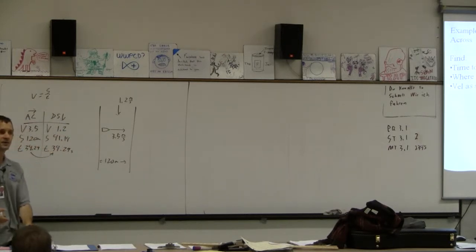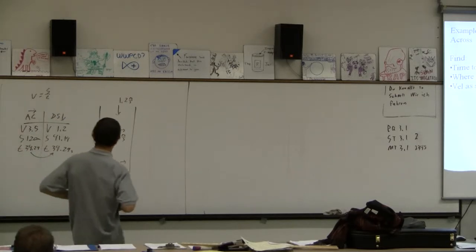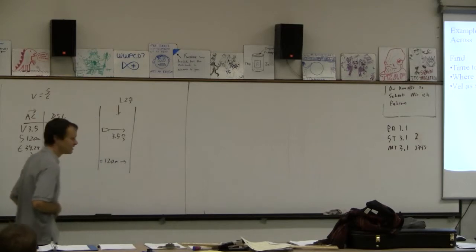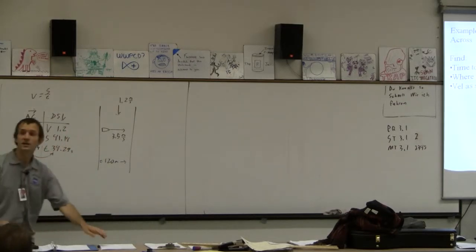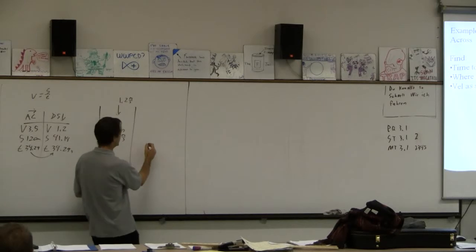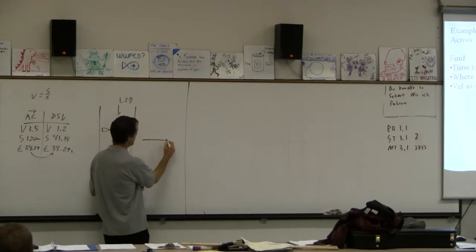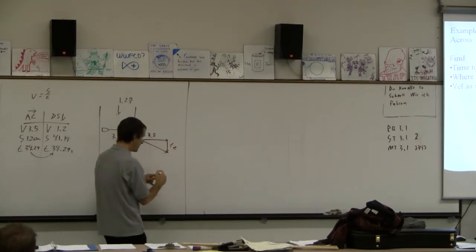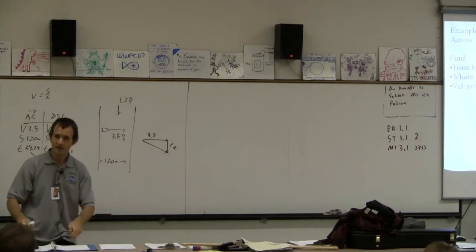What is the velocity as seen from above? What if you were on a helicopter, hovering above the river? What would you see? You'd see them going like this, and then like this. This would be 3.5, this would be 1.2. What's the hypotenuse? What is it? Even? It comes out even?